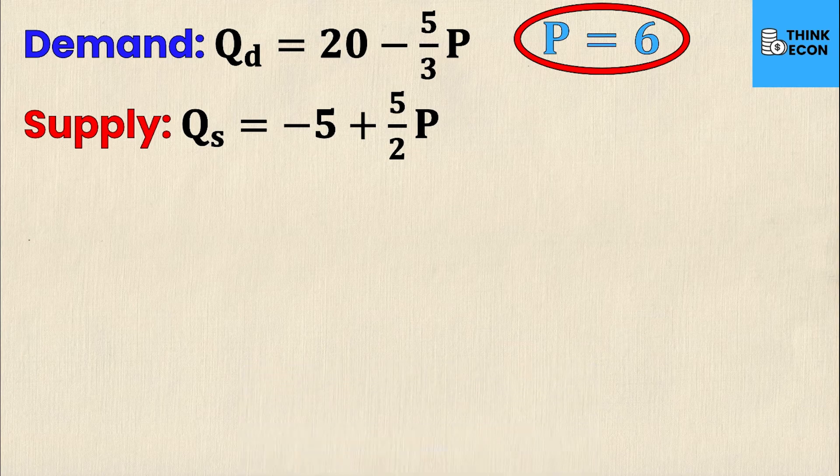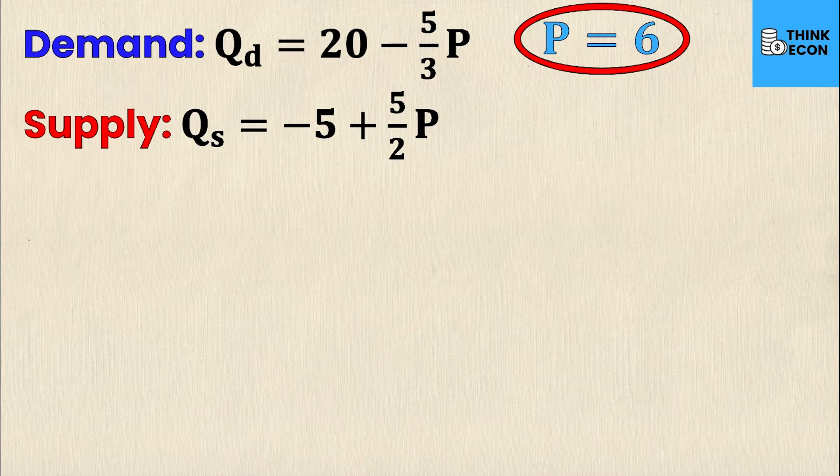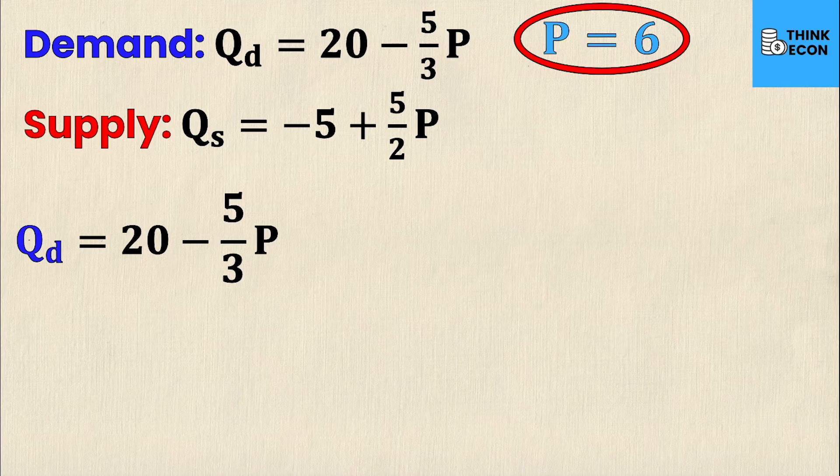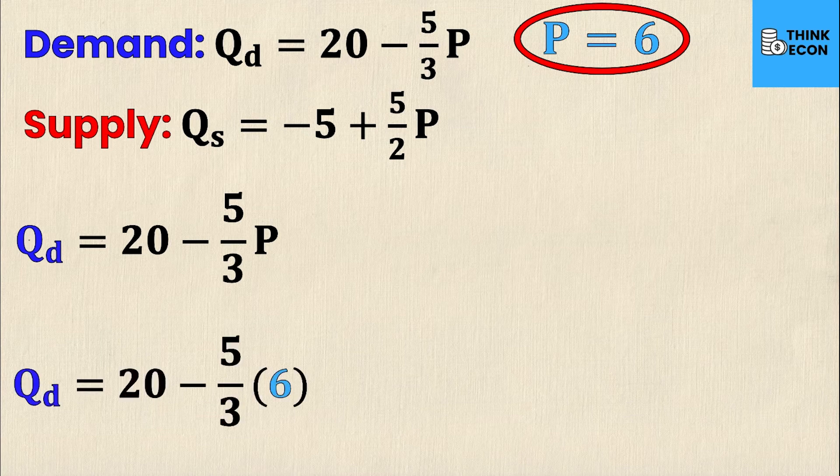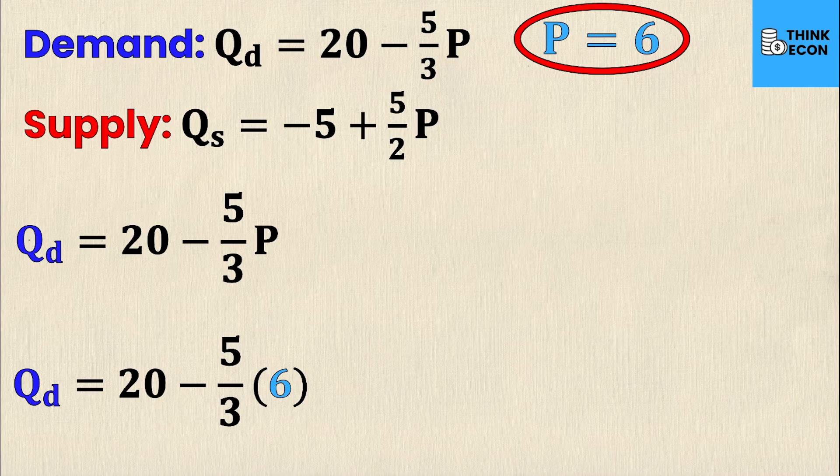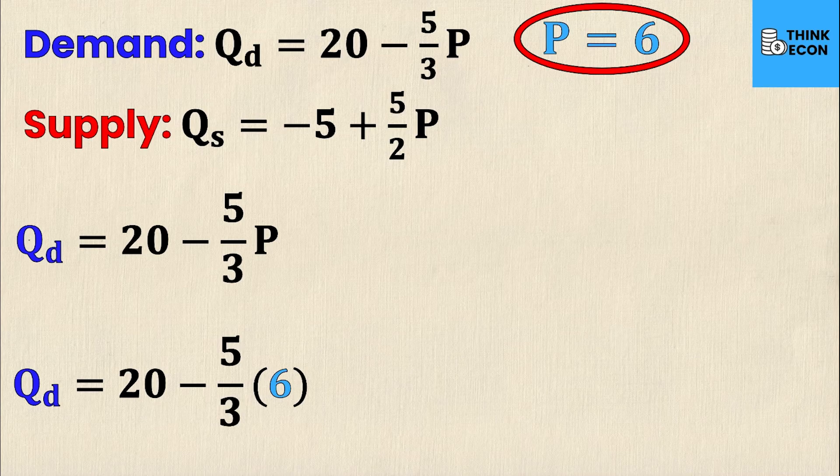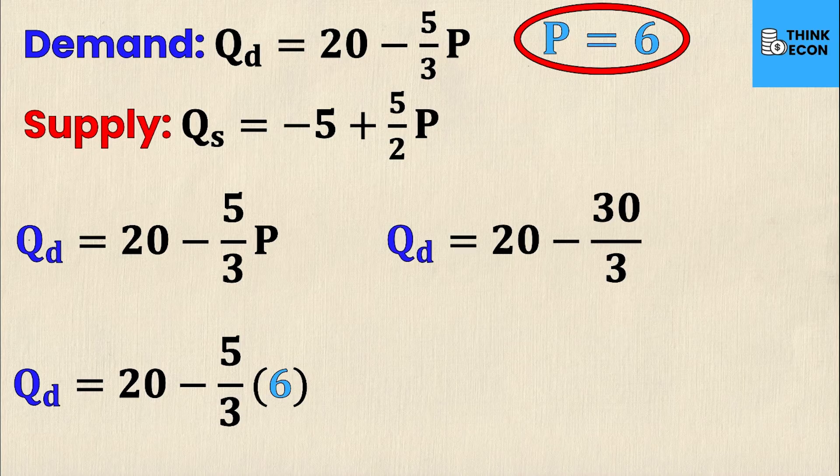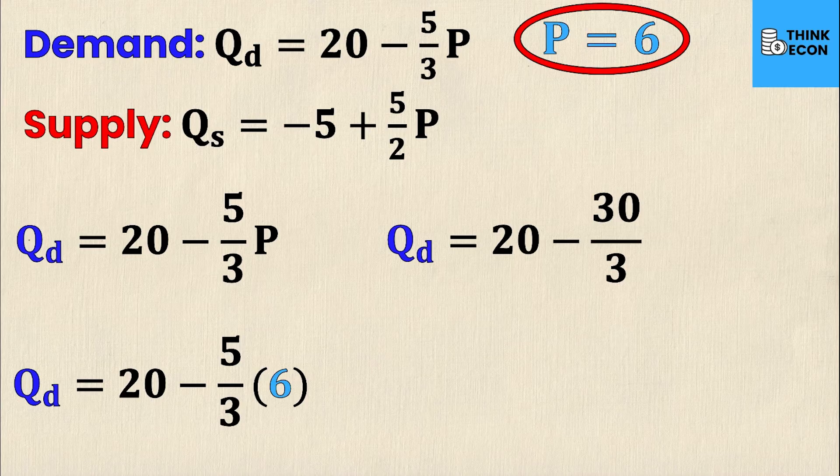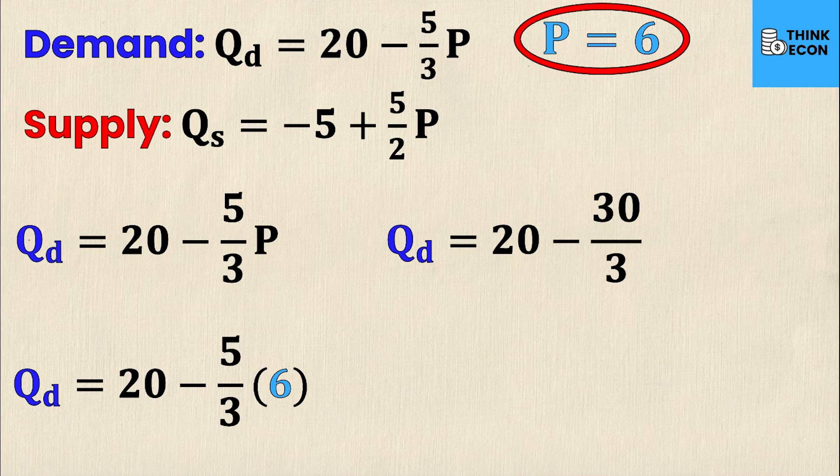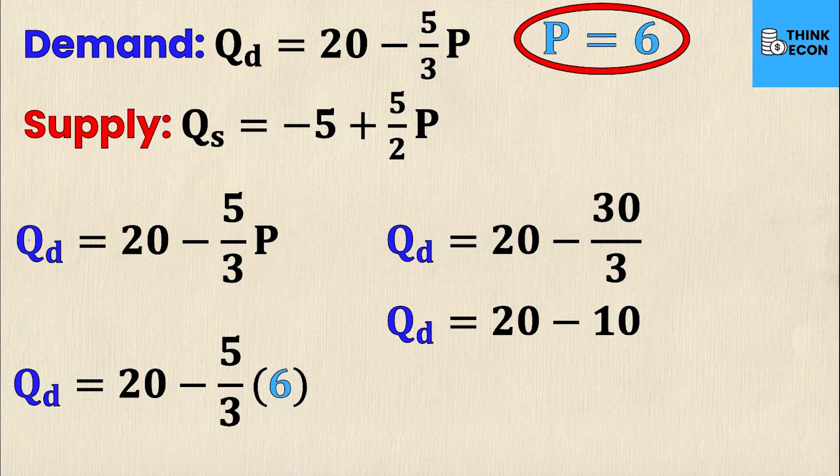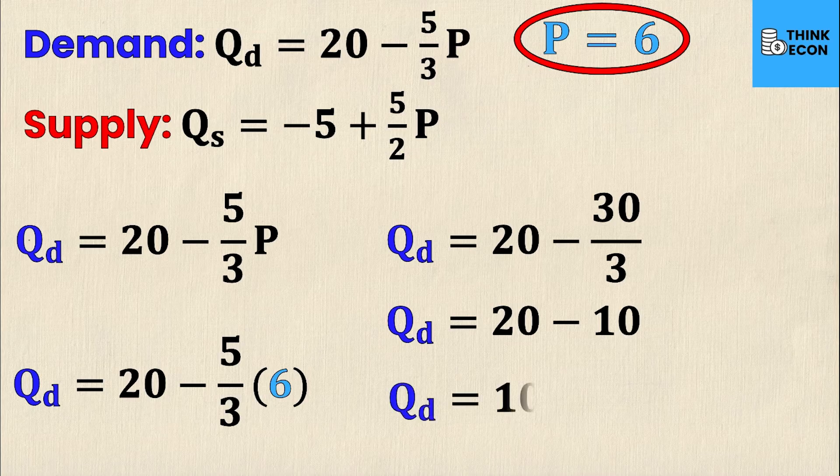Let's start by subbing in P equals 6 into the demand equation and solving for Q. QD equals 20 minus 5 over 3P. I know what P is, so I'm going to sub it in. QD equals 20 minus 5 over 3 times 6. Anytime you're multiplying an integer by a fraction, you simply multiply the integer by the numerator. The next line is QD equals 20 minus 30 over 3, and the 30 is just 6 times 5. I can do that division to yield QD equals 20 minus 10, and finally QD equals 10.